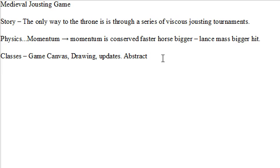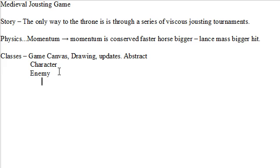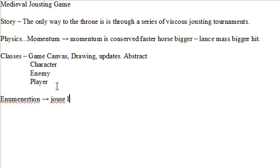We are going to have a character class to hold the base stats of the character. We are going to need an enemy with randomised stats going up the way. If we do a character class and then player and enemy, that way we can do that. And this time we are going to use enumeration to store joust levels and horse level stuff.